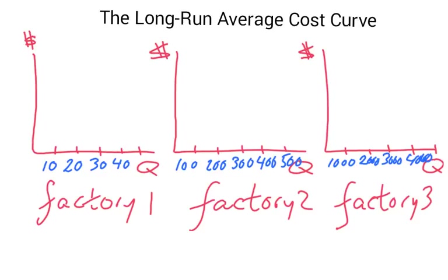The short-run average cost curve is where we choose one particular factory size, let's say factory one. We graph the cost function for this particular factory size. Let's say this factory is relatively small; it can maybe make 10, 20, or 30 products, let's say cars.